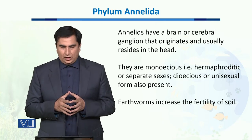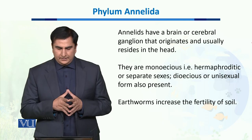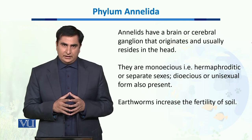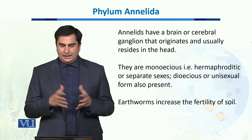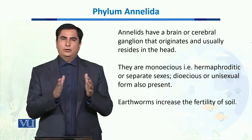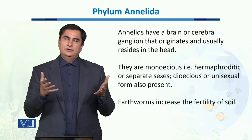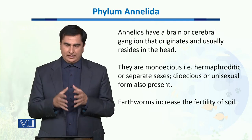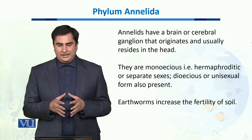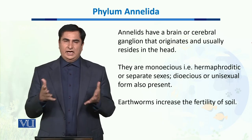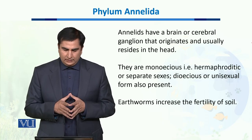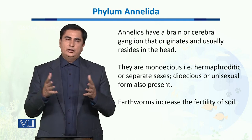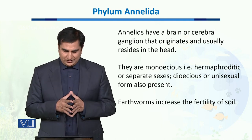When it comes to the mode of sexual reproduction, annelids can be hermaphroditic or they could have separate sexes as male and female organisms. They can also be dioecious, or unisexual, in form.